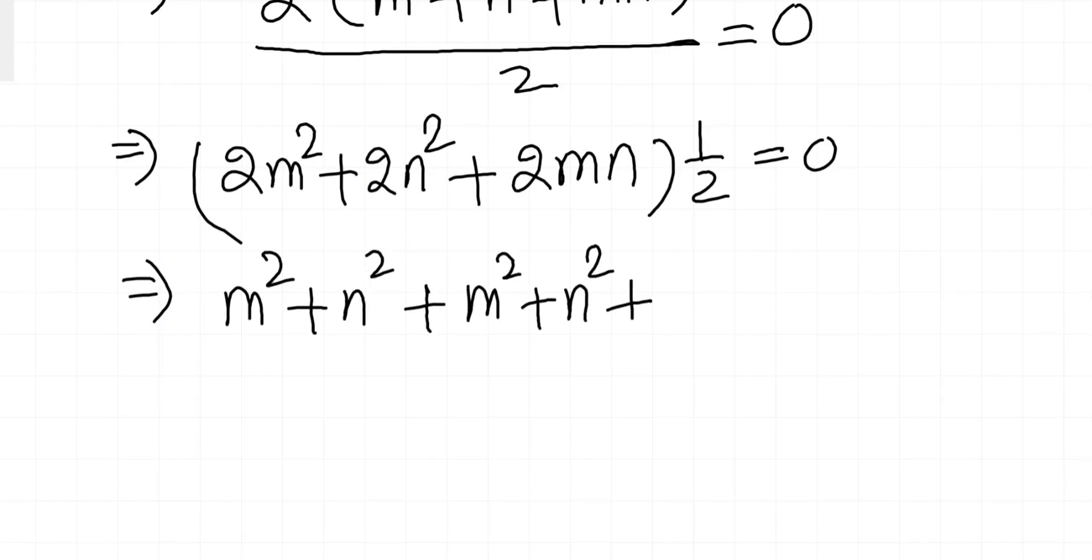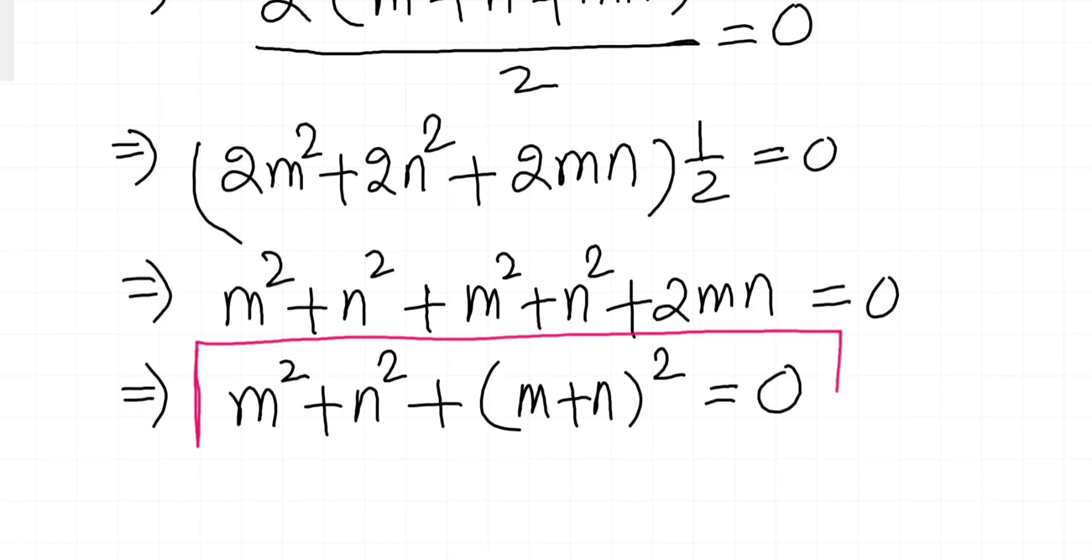and n squared plus 2mn, we can rearrange like this equals zero. This is going to be m squared plus n squared, plus n squared plus 2mn, which is m plus n whole square equals zero.